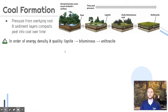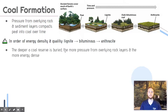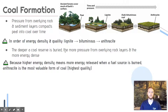We have names for different densities of coal: lignite, bituminous, and anthracite. That goes in order from least dense — you can remember lignite is least dense — to most dense, which is anthracite. A is right at the beginning of the alphabet, so that's a way to remember it. Deeper coal reserves have more pressure on them, which compacts them and makes them more energy dense. The more energy dense a coal source is, the more energy is released when burned, and anthracite is also cleaner because impurities have been squeezed out through longer compression.